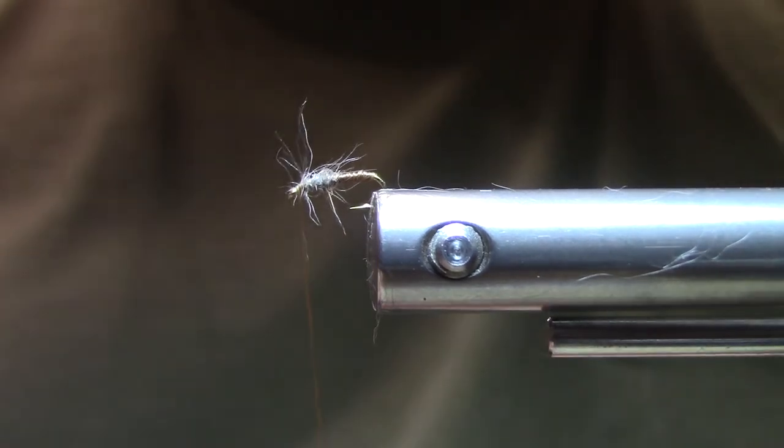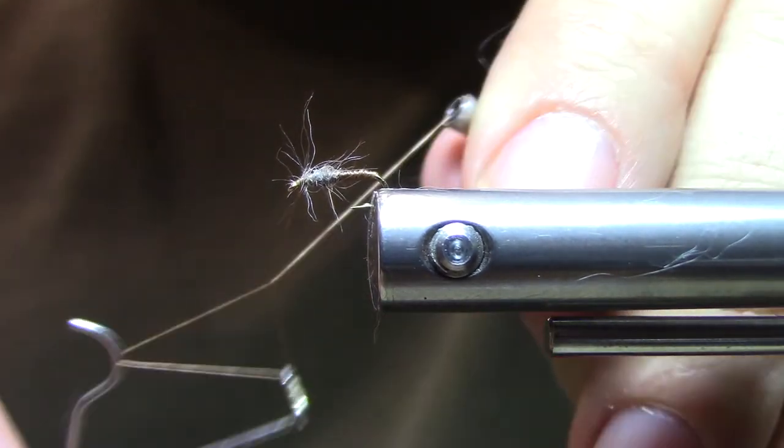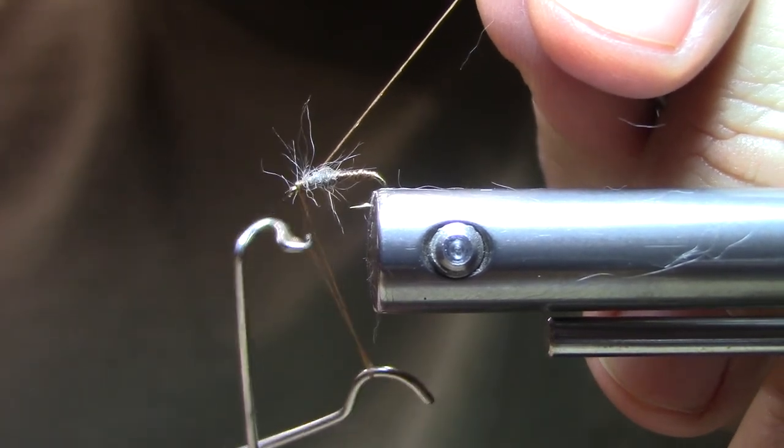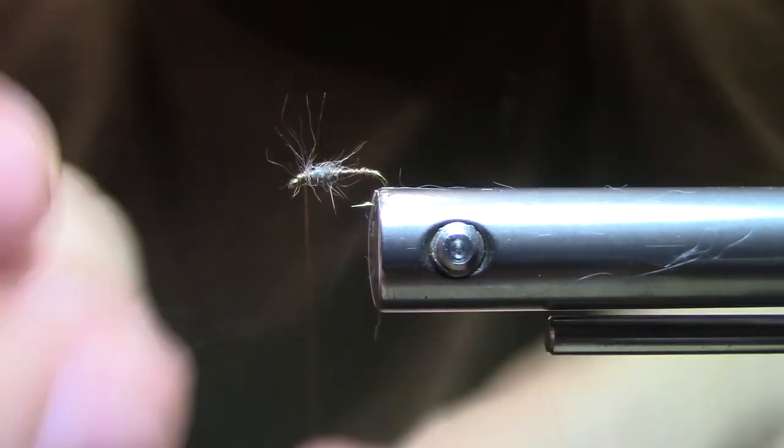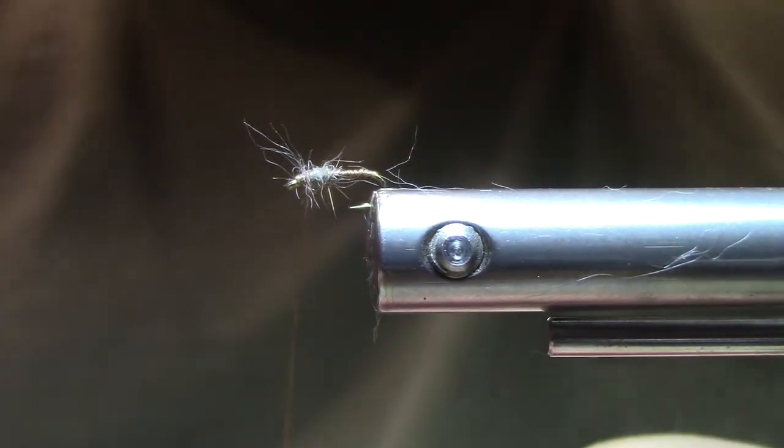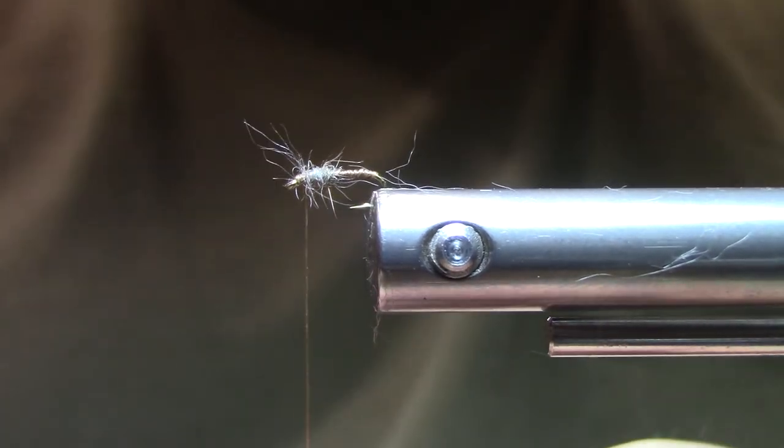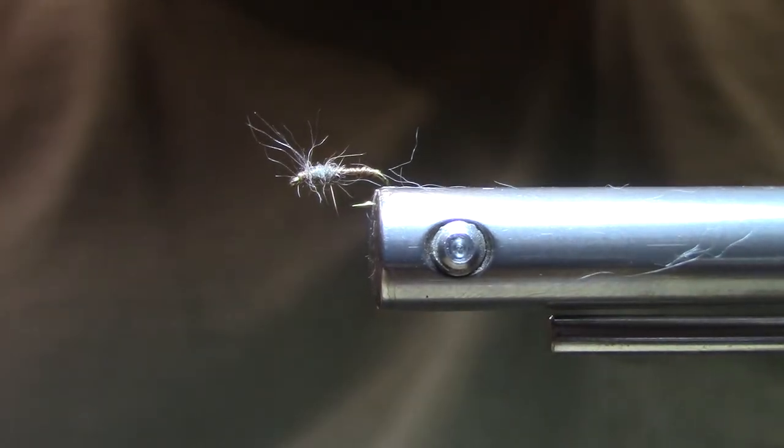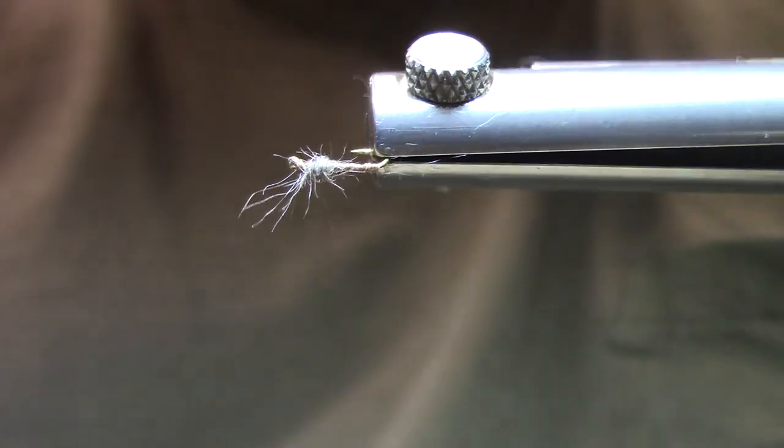If I can catch the thread in my whip finish tool. There we go. And there you have it. That is Al's Rat. A very effective imitation of the chironomid pupa.